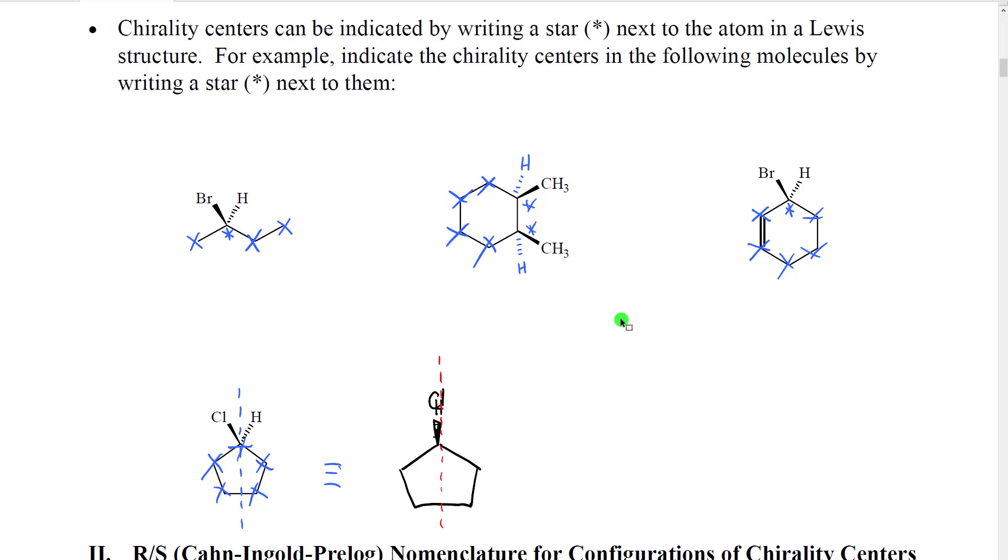When looking at the structure of a molecule it's very often desirable to identify the chirality centers. Organic chemists will do this by putting a star next to a chirality center. This is going to be a very important skill for you to have because identifying the chirality center is the first step in determining the configuration of the chirality center. Here are some examples of molecules where we can identify chirality centers by putting stars next to them.